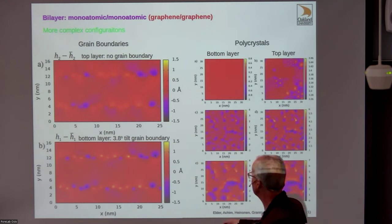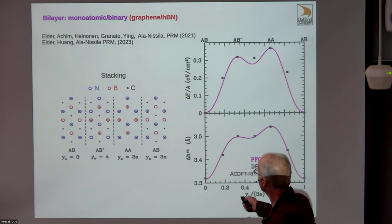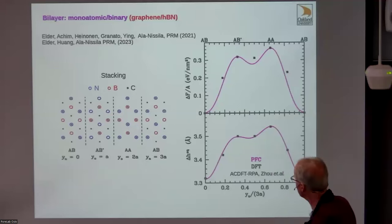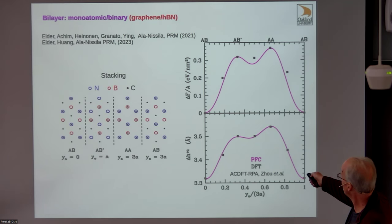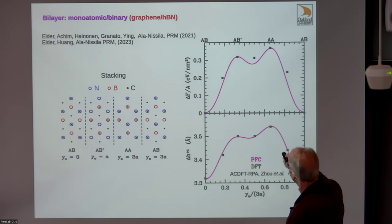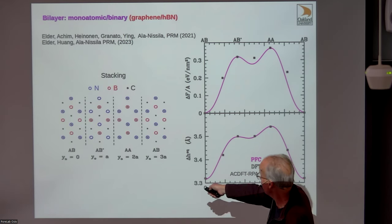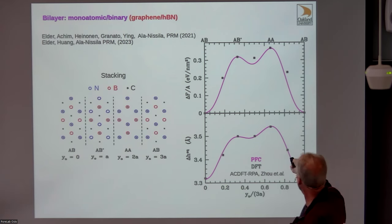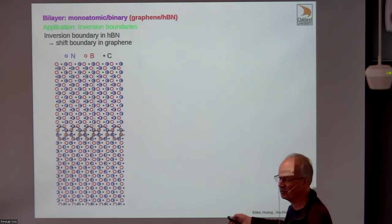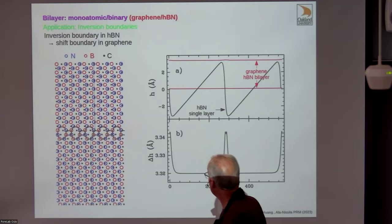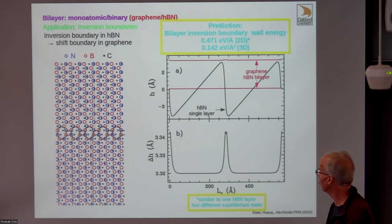You can also study the influence of boundaries in one layer on the other. The last bilayer system I'll discuss is graphene on HBN. The stacking energy and heights from DFT, along with our fits, capture the main features. Because HBN has sublattice ordering, states that are equivalent in graphene have different energies in the graphene-HBN system—for instance, the AB-prime state doesn't appear in graphene. Despite not being perfect fits, the models capture these features well, and we can make predictions for inversion boundaries in these bilayer systems.